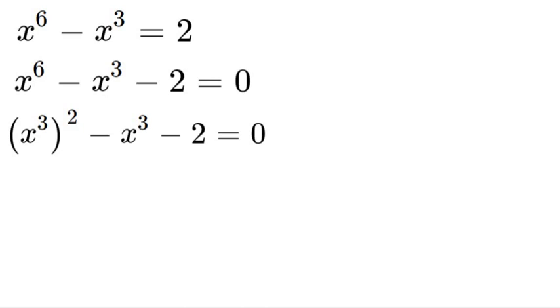So now what we're going to do is let x to the power of 3 be equal to y so that we can work with this equation a little simpler. So we'll let x cubed equal y. So we'll have y squared minus y minus 2 is equal to 0.